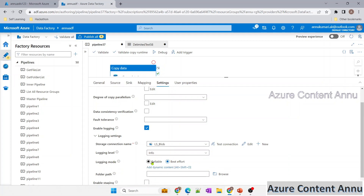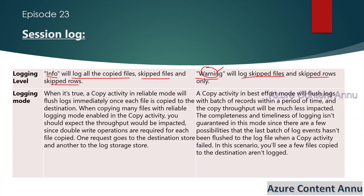We also have to select the logging mode — reliable or best effort. In reliable mode, the copy activity flushes the log immediately once each file is copied to the destination, logging details file by file. This ensures all details are captured without any miss. However, the downside is it performs a double write operation — one to the sink dataset and another to the session log file — which impacts throughput and takes more time.